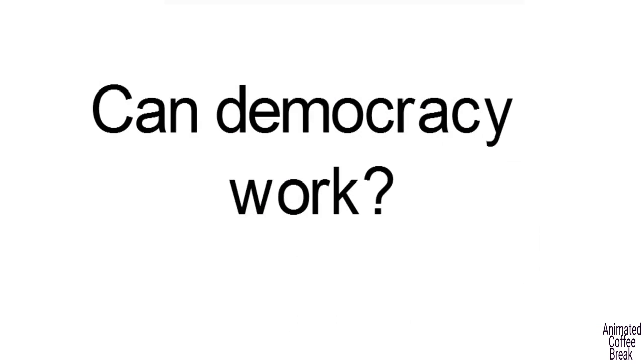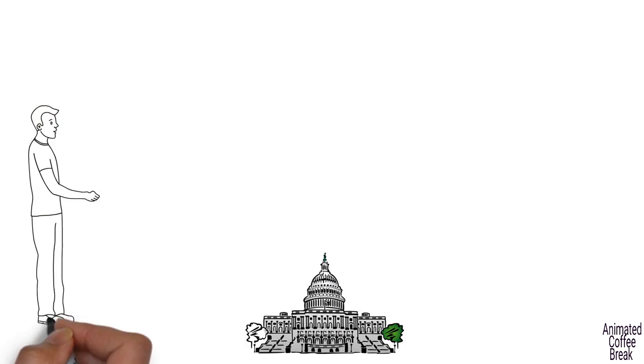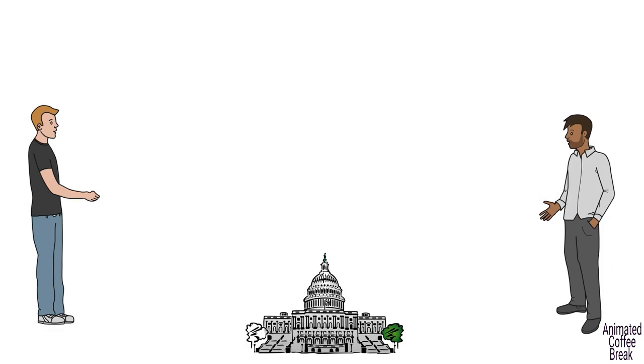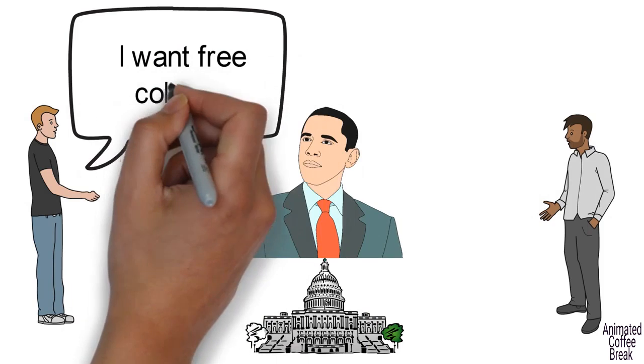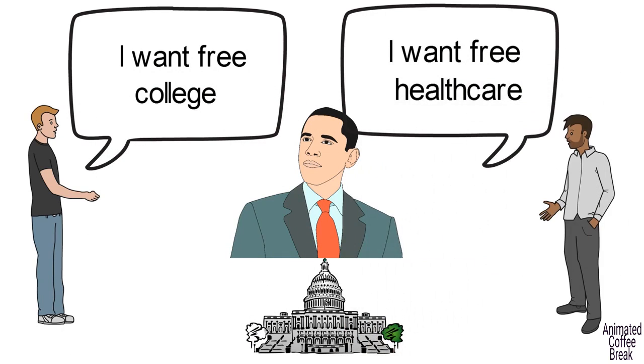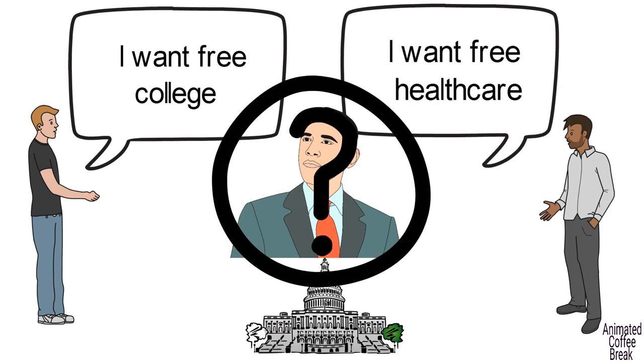Can Democracy Work? Democracy is a government system in which the citizens can influence government decisions through their representatives in the country's governing bodies, and the representatives in turn try to represent the views of their voters. But does this system actually work?